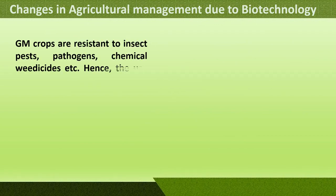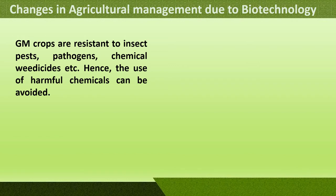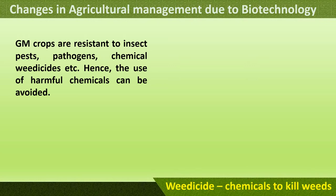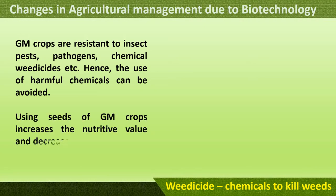GM crops are also resistant to insects, pests, pathogens, and herbicides. Since GM crops are already resistant to weeds and pests, we don't need to use harmful chemicals. Using seeds of GM crops increases the nutritive value of the crop and decreases crop loss. Farmers benefit because these crops have high nutritive value, are good for eating, and there is less chance of the crops being destroyed.